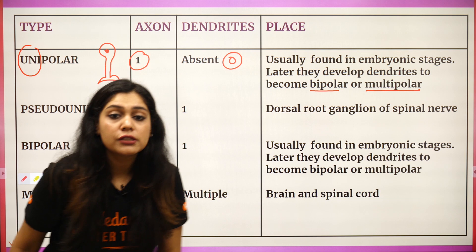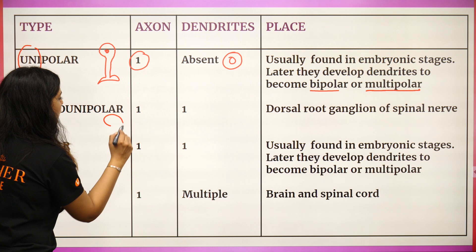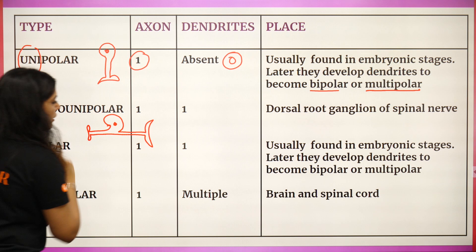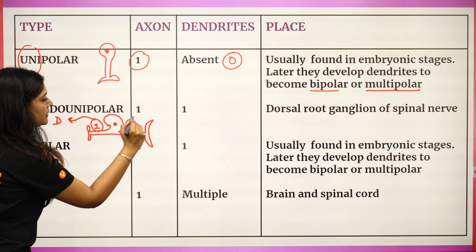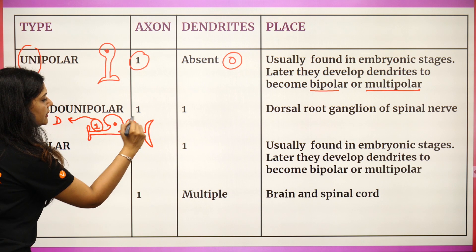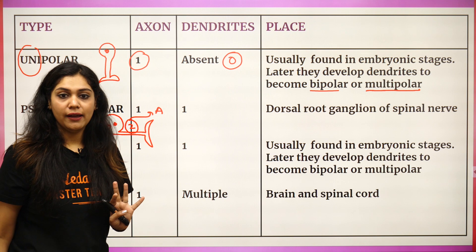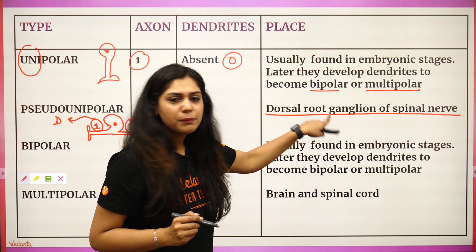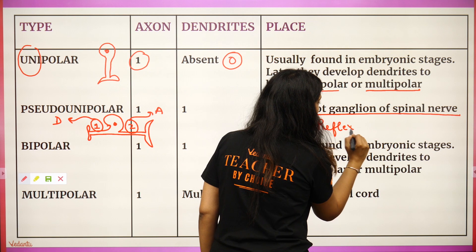Next: pseudo-unipolar. Pseudo means false — it appears unipolar but is not truly unipolar. One part acts as a dendrite and the other part acts as an axon, so it has one axon and one dendrite, but it looks pseudo-unipolar. Where do we find it? Dorsal root ganglia of the spinal cord. You will also get this term in the reflex action diagram.